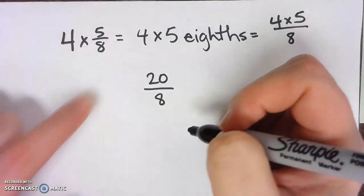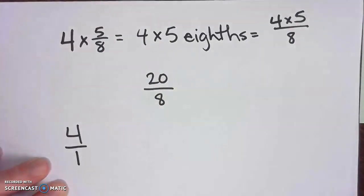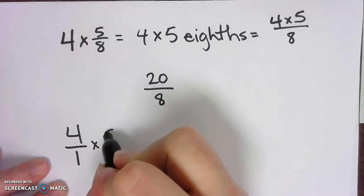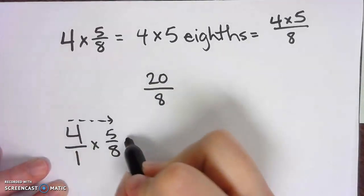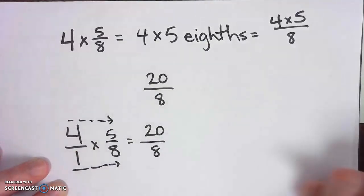And in class, we do it on the whiteboard like this. Under every whole number, there is an invisible number one. So we go straight across the top: 20. Straight across the bottom: eighths, which is 20/8.